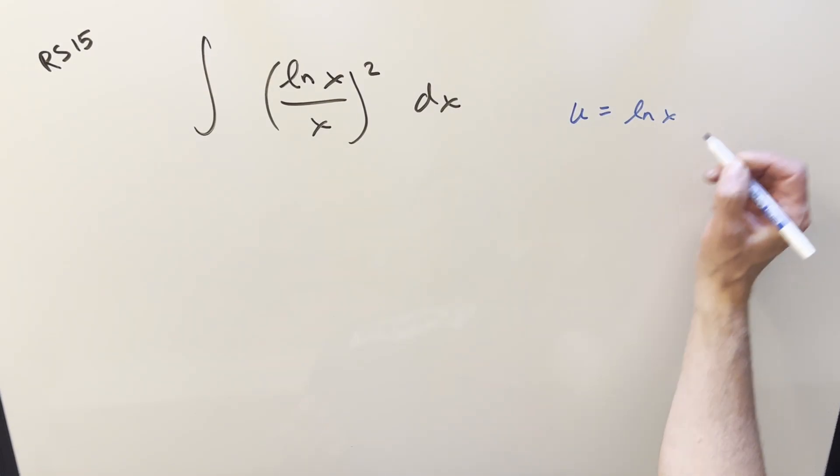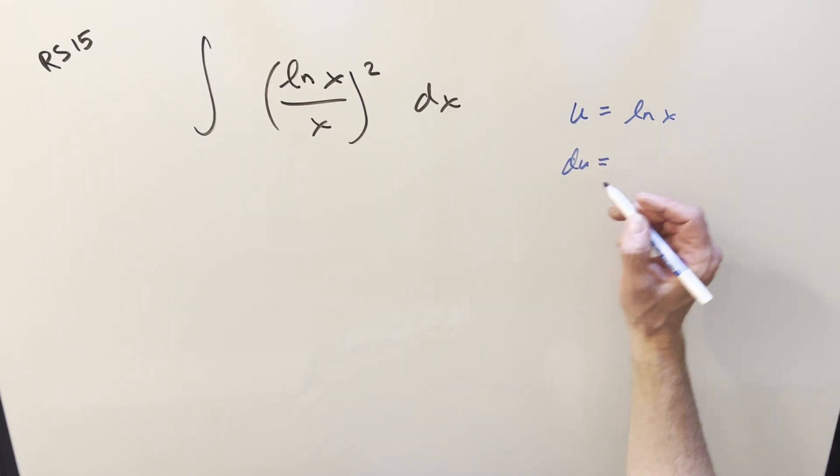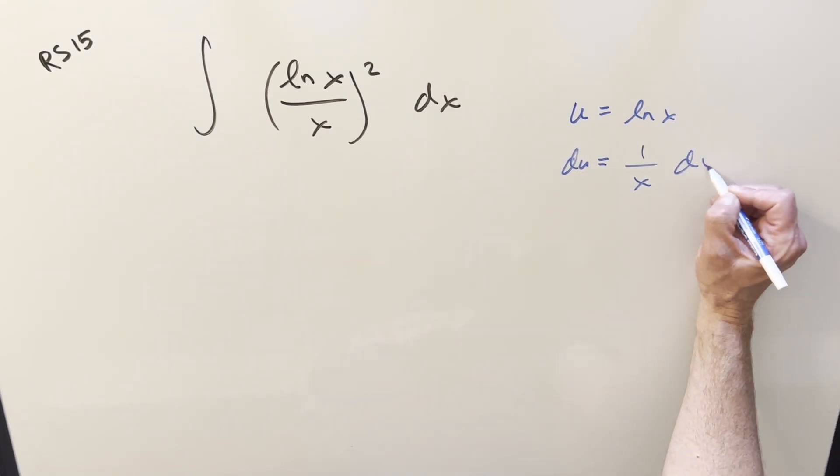If we did a u substitution, u equals ln x, then our du value is going to be 1 over x dx.